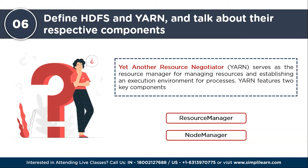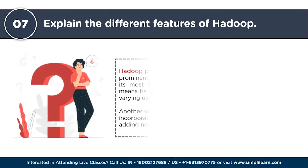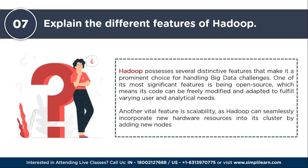The next question: explain the different features of Hadoop. Hadoop possesses several distinctive features that make it a prominent choice for handling big data challenges. One significant feature is being open source, meaning its code can be freely modified to fulfill varying user and analytical needs. Another vital feature is scalability — incorporating new hardware resources by adding new nodes. Furthermore, Hadoop employs data replication to ensure data recovery in the event of failures. Additionally, the concept of data locality in Hadoop prioritizes moving computation processes to the data itself, resulting in improved processing efficiency.